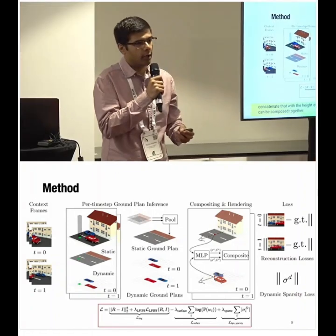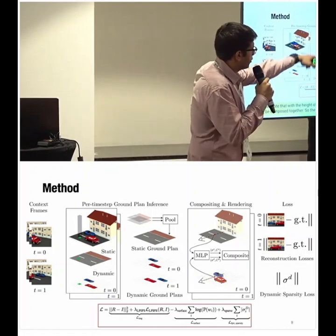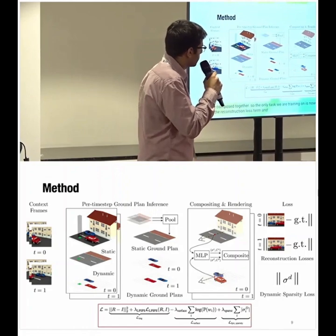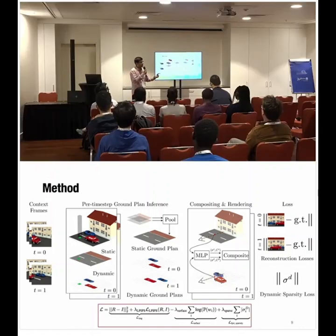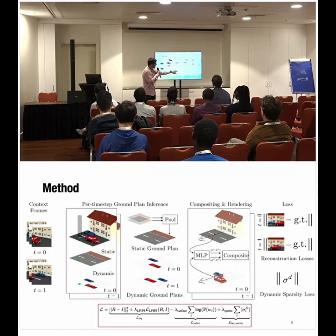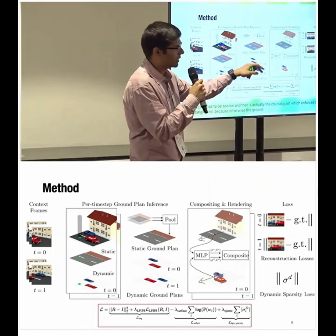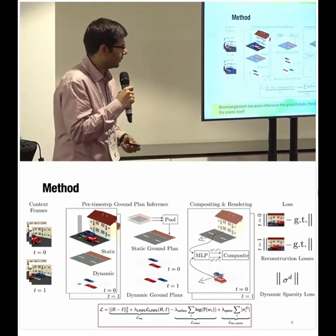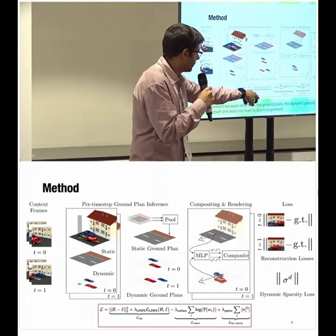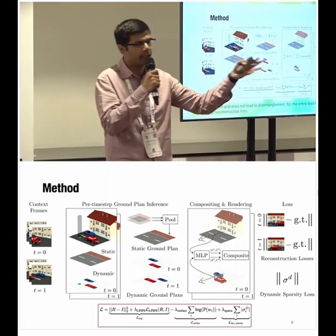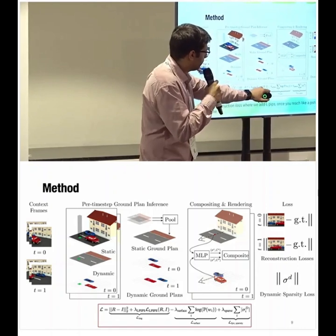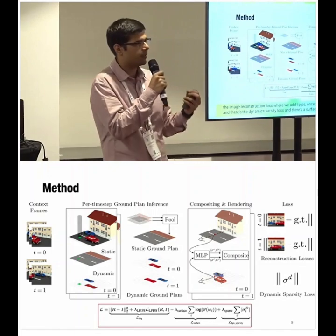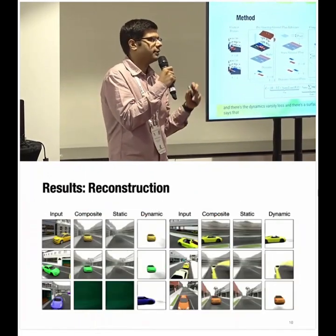The only training task is novel view synthesis, forming the reconstruction loss. We also add a dynamic sparsity loss on the dynamic ground plans, enforcing that the densities expressed by the dynamic ground plan are sparse. This is the crucial constraint that enforces disentanglement — without it, the dynamic ground plan would represent the entire scene. The full loss includes image reconstruction loss with LPIPS added once PSNR reaches 15-16, the dynamic sparsity loss, and a hard surface loss encouraging densities close to 0 or 1.